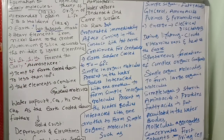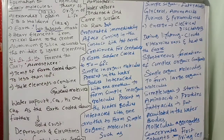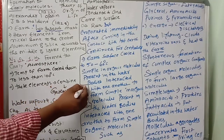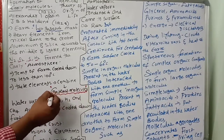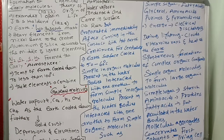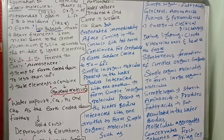When the temperature of the earth cooled down to less than 100 degrees centigrade, these elements combined to form gaseous molecules like water vapor, carbon dioxide, hydrogen, and methane. As the earth cooled down further, it developed a solid crust.